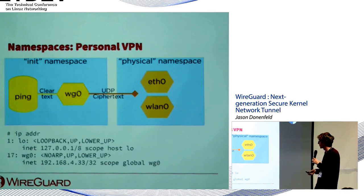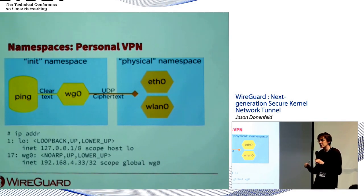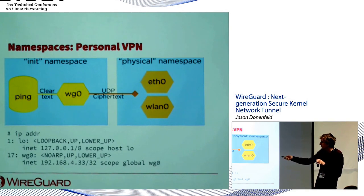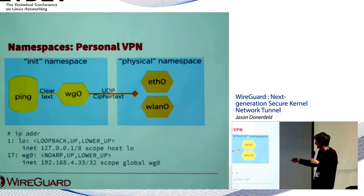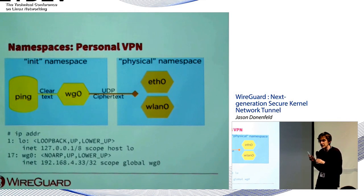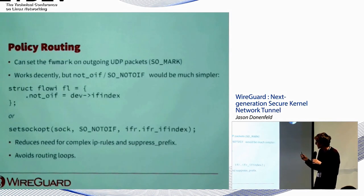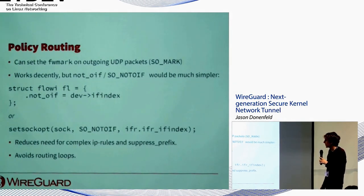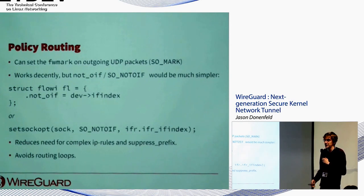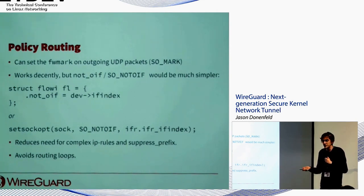Alternatively, the picture can be reversed: give the init namespace only the wg0 interface, and put the ethernet or wireless interfaces in a separate 'physical' namespace. When your web browser runs in the init namespace, the only interface it can see is wg0 — no possible leakage. This is all made possible because the socket always stays in the original namespace where the device was created.